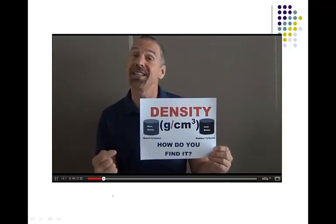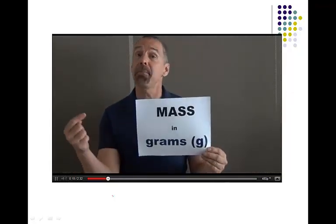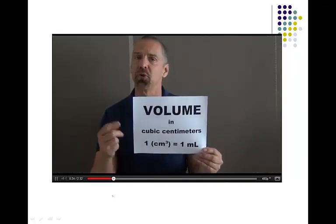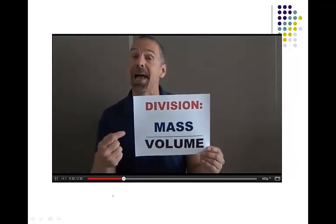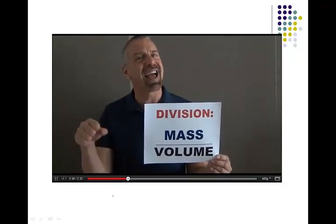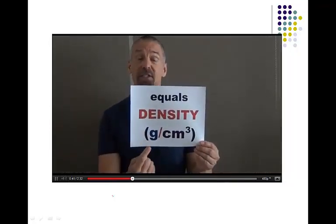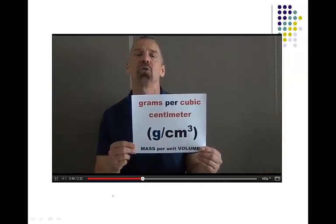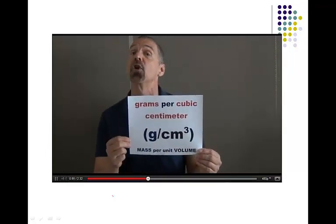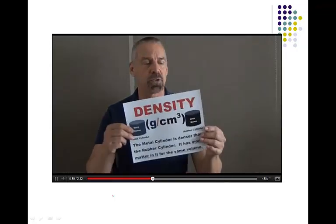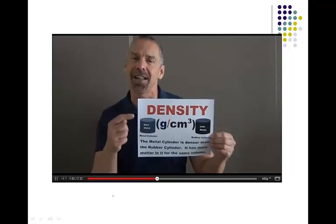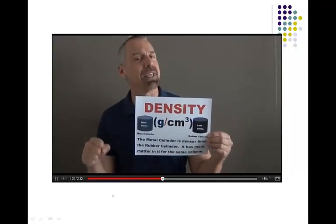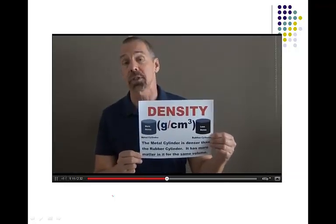Density — you want to find density, you have to get the mass, record the grams, figure out the volume too. You do the mathematics; division is the one you choose. You take the mass, divide it by volume at last. You're gonna get something new that relates the two, easy to remember for you. It's grams per cubic centimeter for the unit you use.